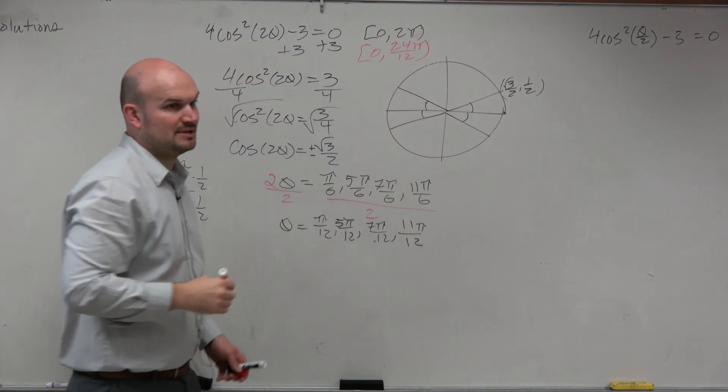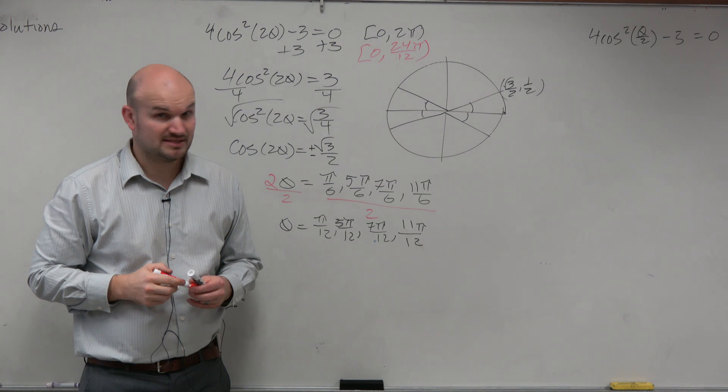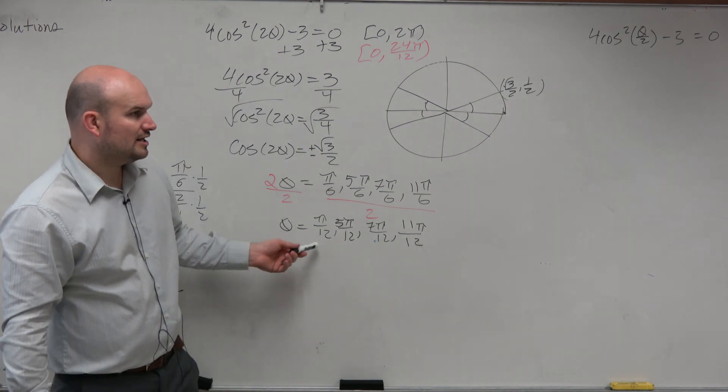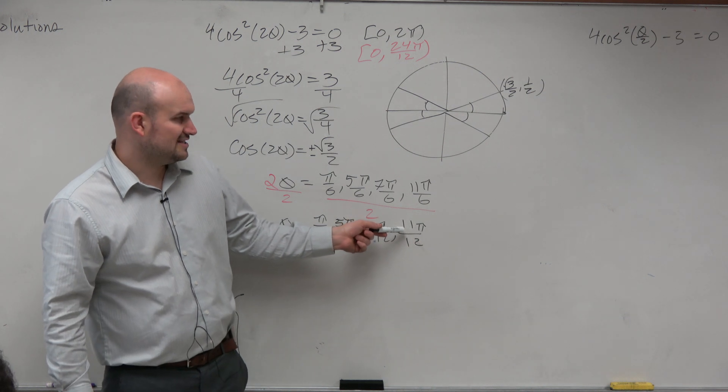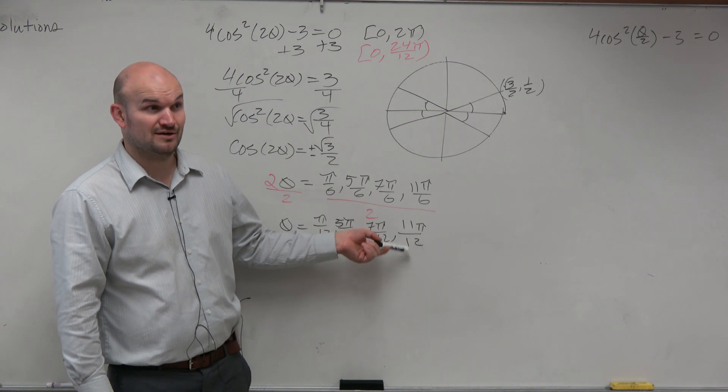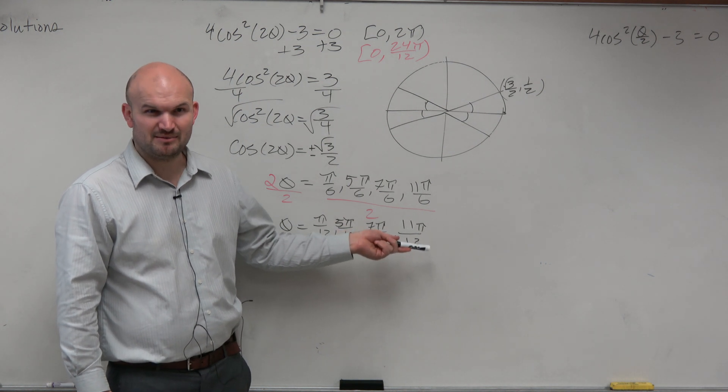However, I would say we're pretty comfortable with understanding that 0 to 2 pi is 24 pi over 12. Would you guys agree with me at least on that statement? Does that make sense? 24 divided by 12 is 2? Look at our answers. The highest answer we got is 11 pi over 12. Do you think there's room in here for more answers?